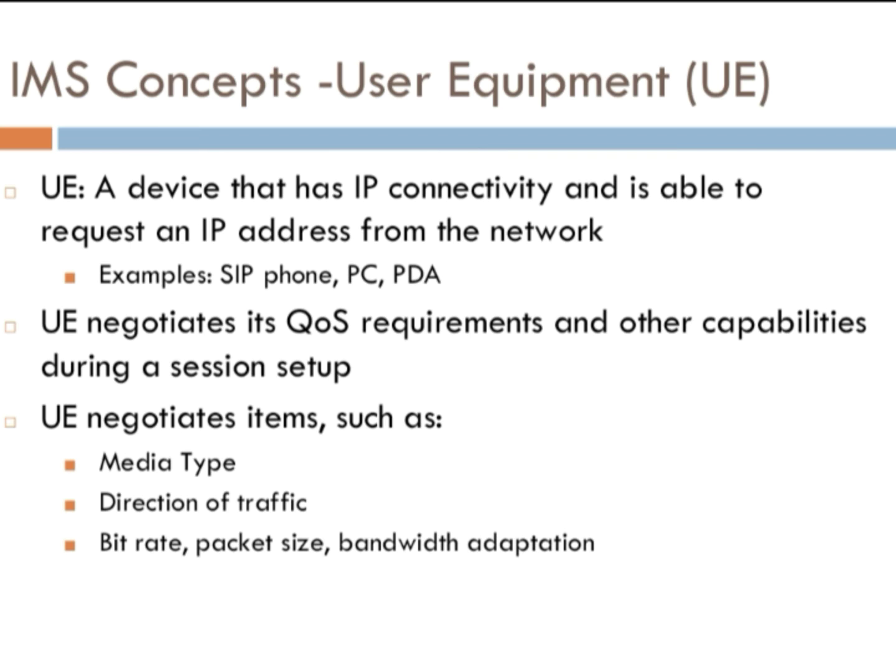Regarding user equipment — now including mobile, internet-connected devices — what are the main items to be noted: media type, direction of traffic, bit rate, packet size, and bandwidth adaptation. All of these relate to user equipment.